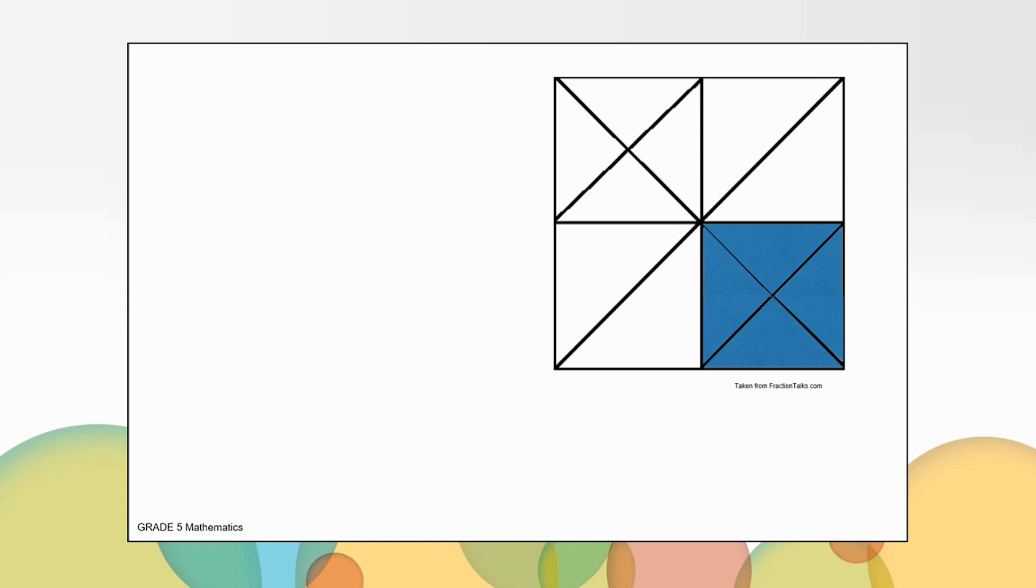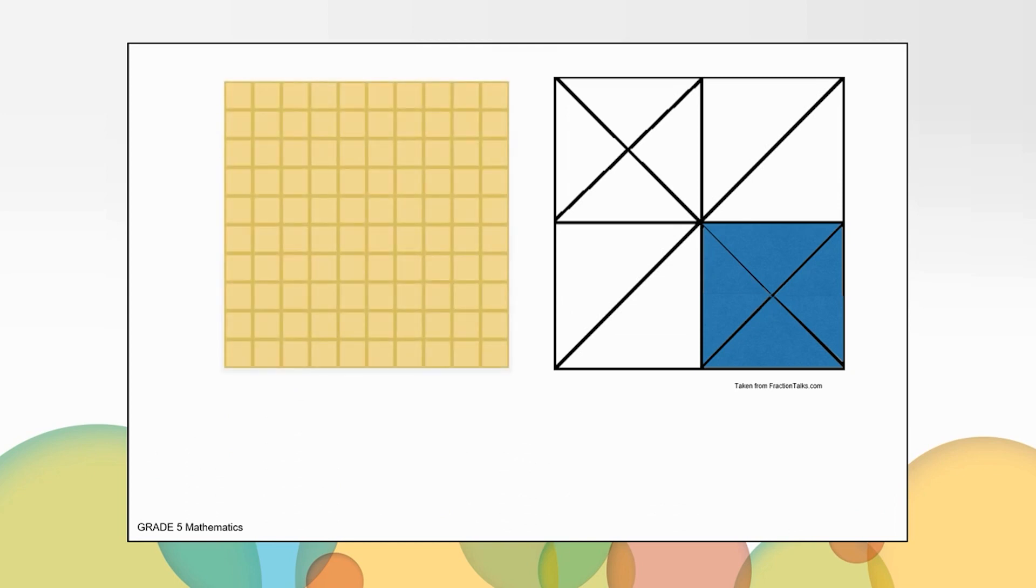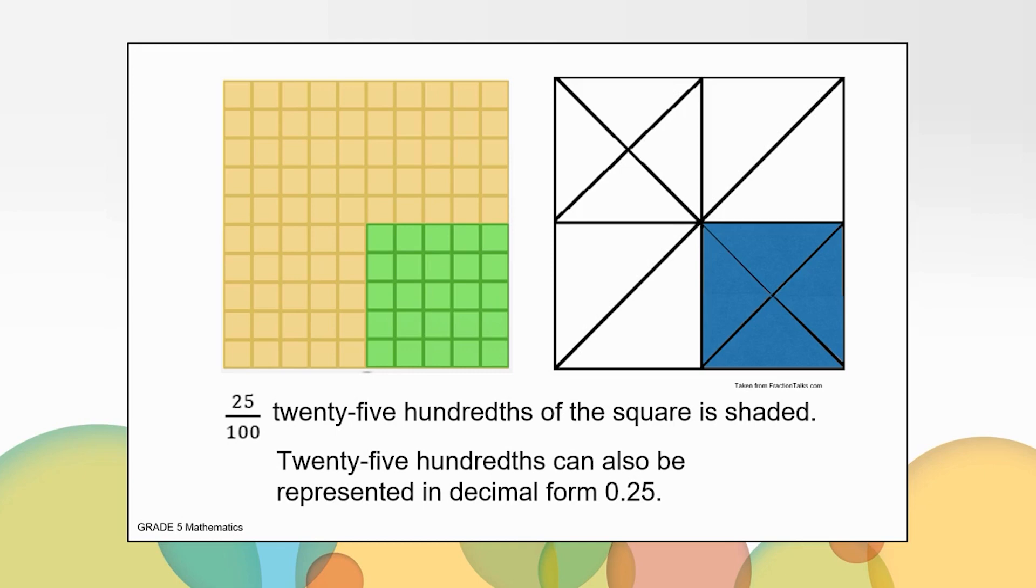I can think of one more way to look at this image. This 10 by 10 grid that has 100 total small squares on it can be cut up into four sections, like this. If I take out the blue shaded region, then I can see that I have a section of 5 by 5 green squares, which totals 25 small squares. So, this fractional amount is 25 hundredths. And because the denominator is 100, I can easily write this fractional amount in decimal form. Did this thinking match your thinking?